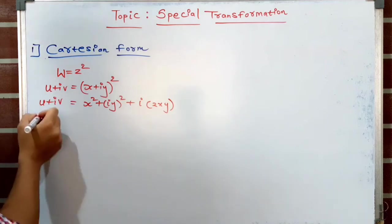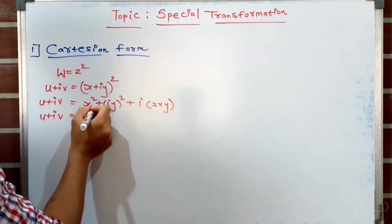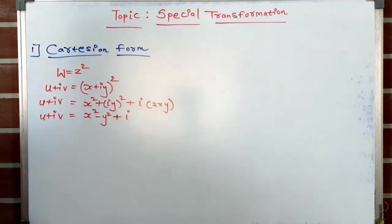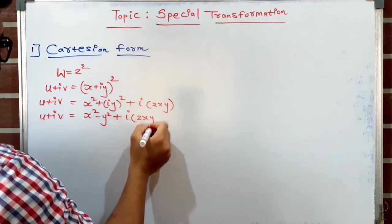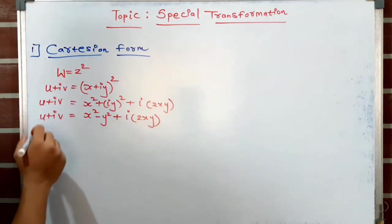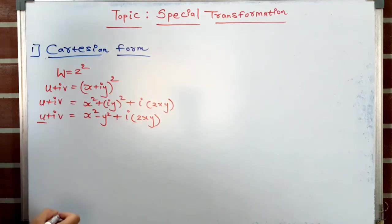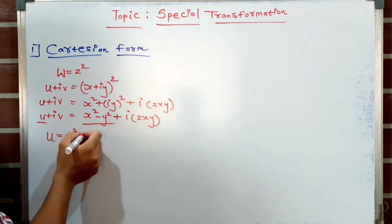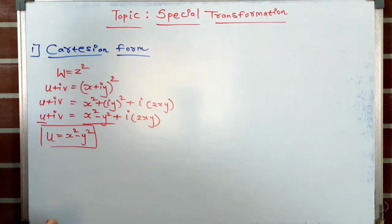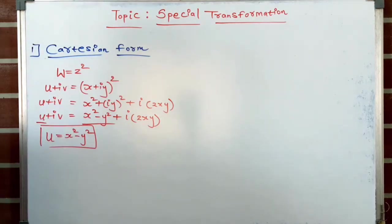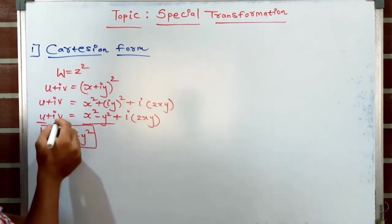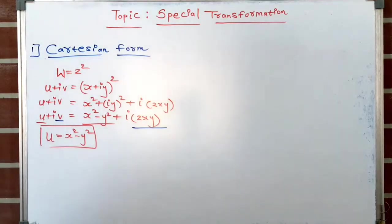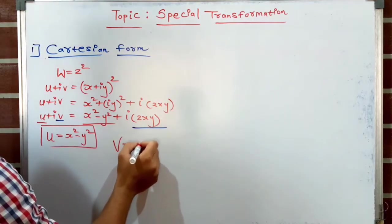Expanding further: u + iv = x² − y² + i·2xy, since i² = −1. Now separating real and imaginary parts: on the left-hand side the real part is u, and on the right-hand side we get x² − y², so u = x² − y². The imaginary part on the left is v, and on the right is 2xy, so v = 2xy.